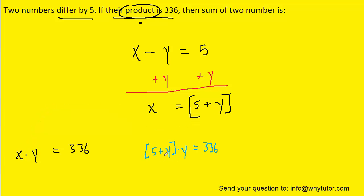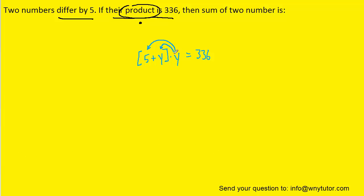So here we have substituted in 5 plus y for the variable x. And to solve for y, we're going to have to distribute this y into both terms of the brackets. And when we do that, we have y multiplied by 5 to make 5y, and then y times y, of course, is y squared.